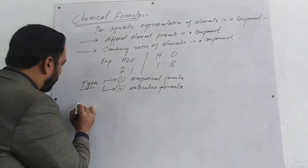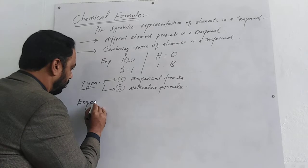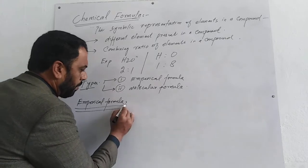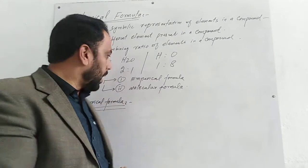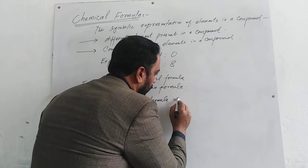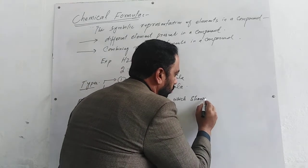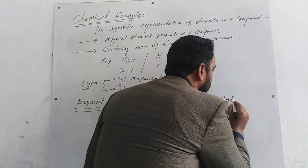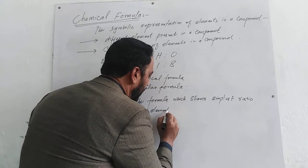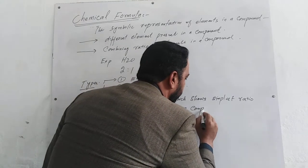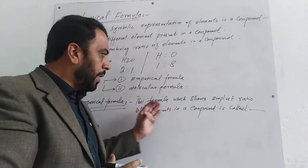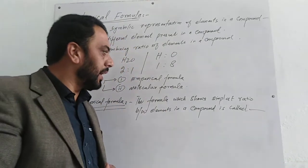Now the first one is empirical formula. Empirical formula ko simple formula bhi kehte hain. The formula which shows the simplest ratio between elements in a compound is called empirical formula. یہ وہ formula ہے جو ہمیں ساداترین ratio دکھاتا ہے.